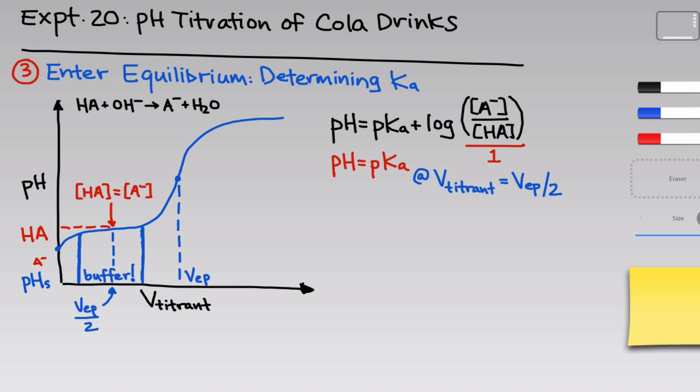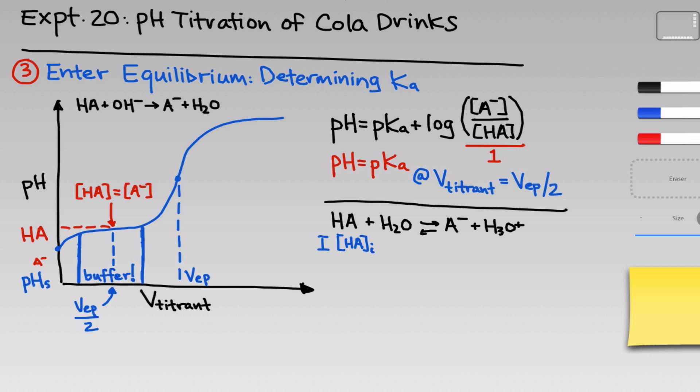There's another way to use titration data to measure a Ka value — an algebraic or ICE table style approach. The key equilibrium for Ka is HA reacting with water to form A⁻ and hydronium ion. At the very start of the titration, we know the concentration of HA initially before any dissociation — we can calculate that from the equivalence point using the method discussed earlier. The initial concentrations of A⁻ and H₃O⁺, before dissociation is turned on, are both effectively 0 (ignoring the 10⁻⁷ M hydronium in pure water).